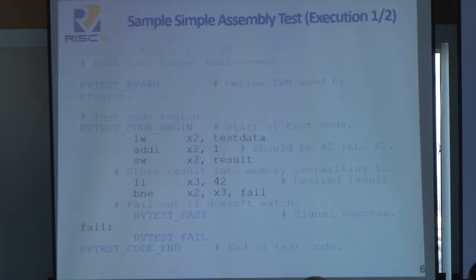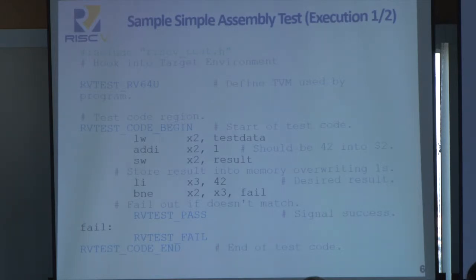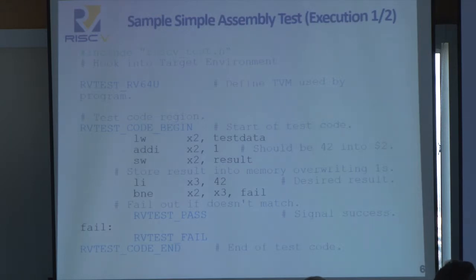Now let us run through a simple test that is provided in the readme of the RISC-V tests repository. First, at the top is an include statement to the RISC-V test dot h header file. This will hook into the target environments, the details of which I'll explain next. The next line is the macro RV test RV64U.